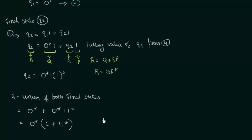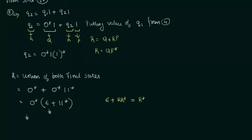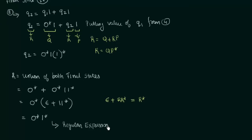From our identities we know that ε + r·r* = r*. Here we have ε + 1·1*, so treating 1 as r, this whole term equals 1*. Therefore, the expression simplifies to 0*·1*. This is the required regular expression for the DFA. Whenever you have more than one final state, find the regular expression for all the final states and perform the union of them — that gives you the regular expression for the DFA.